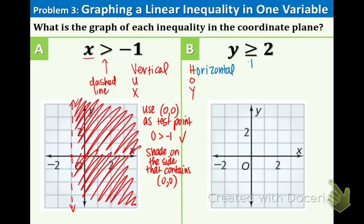And this time there is a line underneath. So that means we are going to definitely be having a solid line rather than a dashed line. So go to the 2 on the Y axis and draw a solid horizontal line through 2.